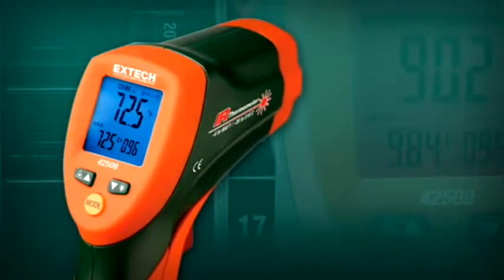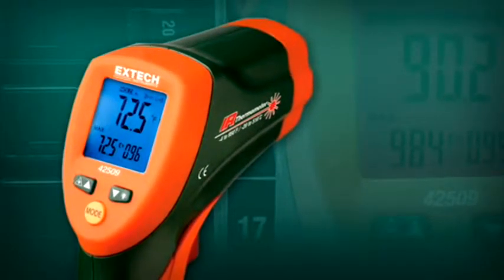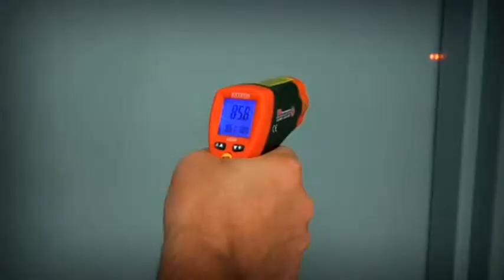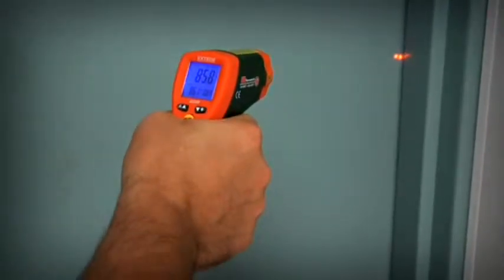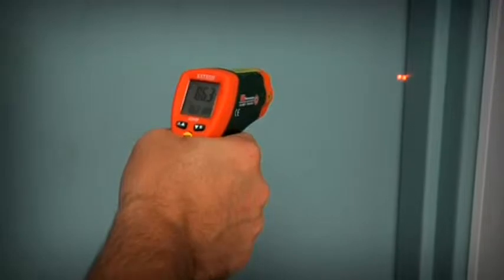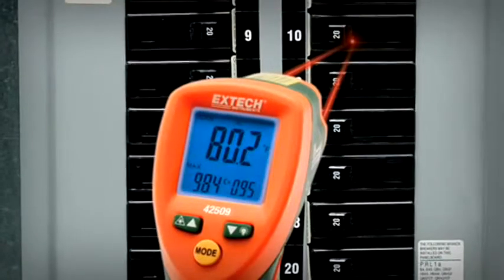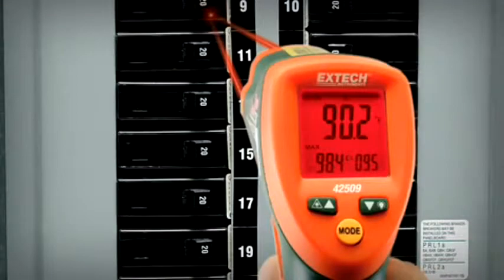What makes the X-TEC 42509 stand out from other IR thermometers is its innovative alert system that not only triggers an audible alarm, it also changes the display color from blue to red when temperatures exceed a user-defined range.